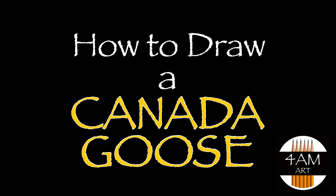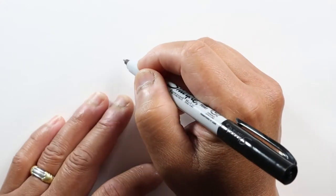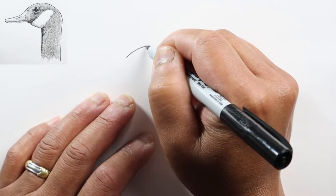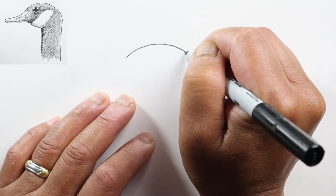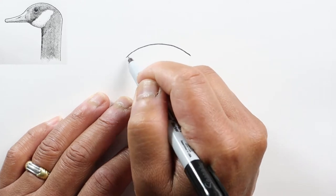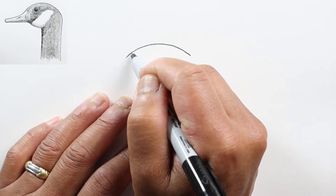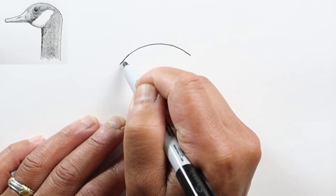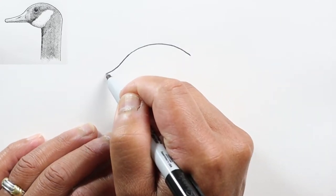Hello everyone, Justin here. This morning we are going to draw our Canada goose head. Let's start by drawing the top of its head, just a nice gentle curve. At the front, this curve is going to start curving the other way for its beak.